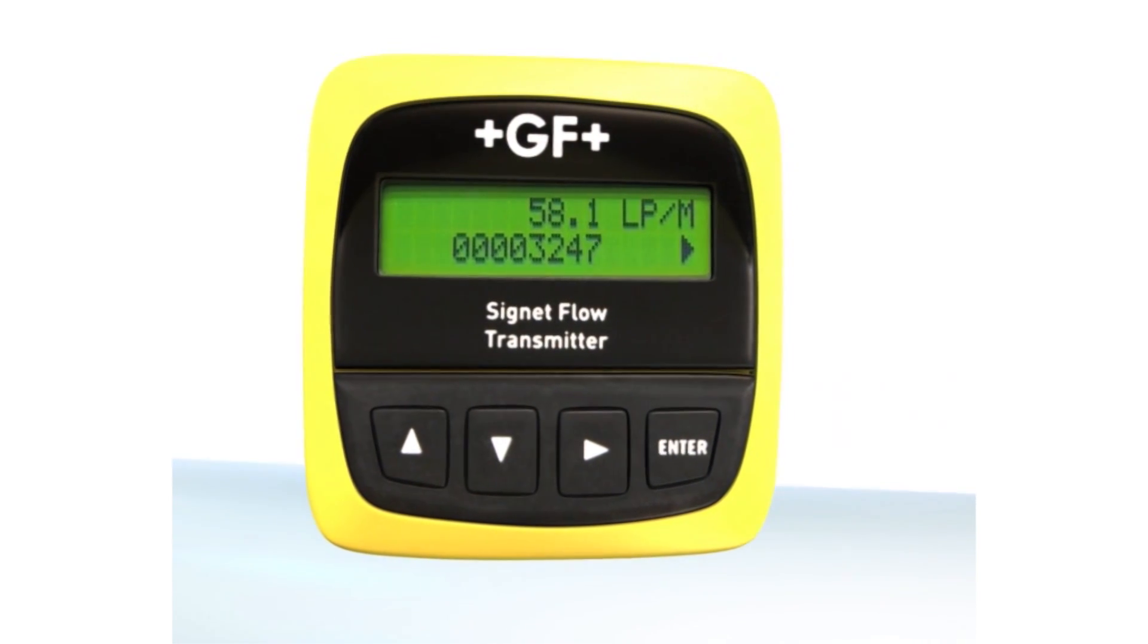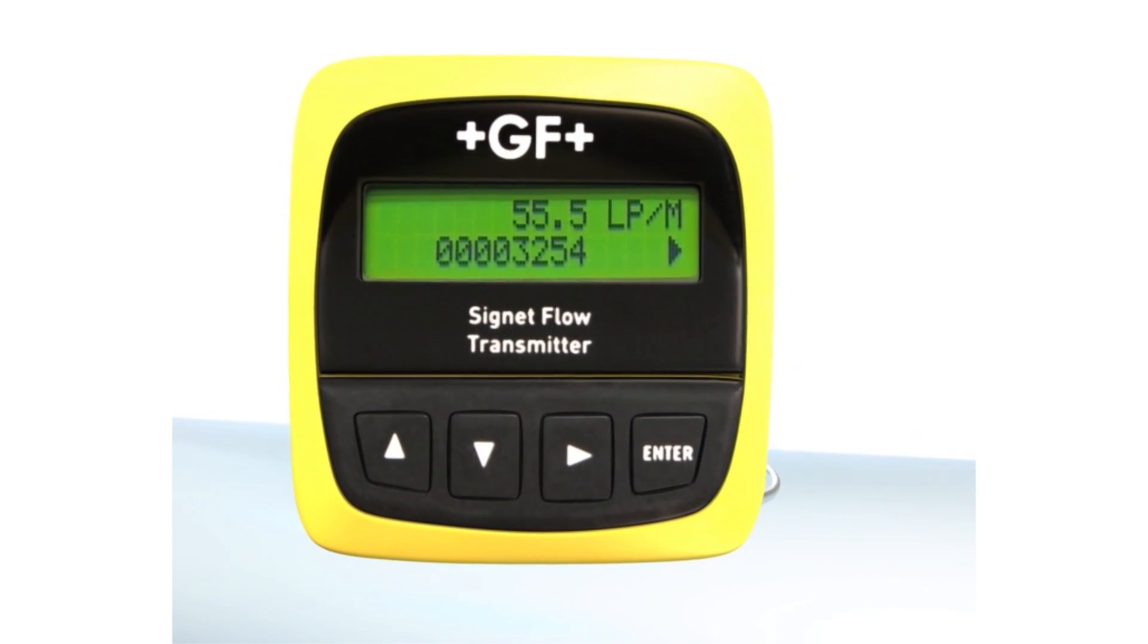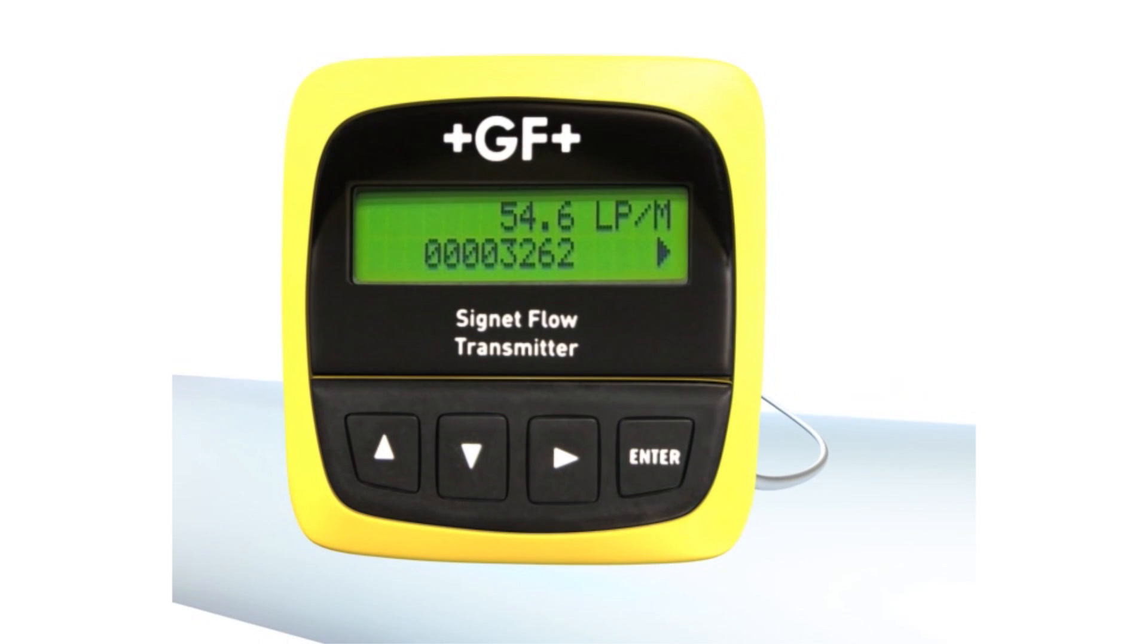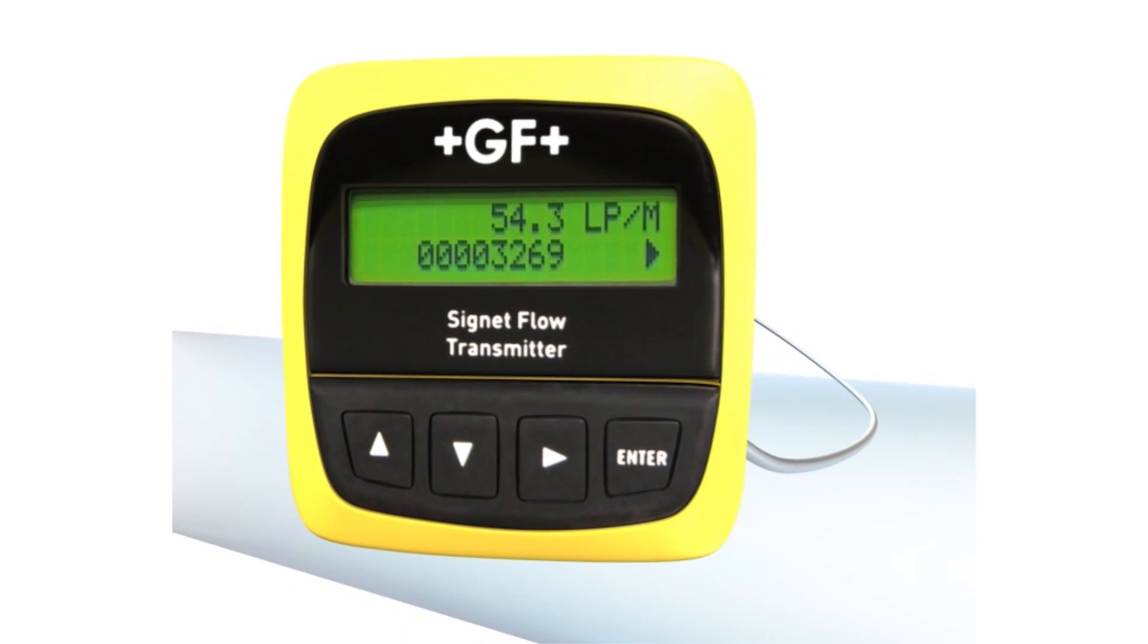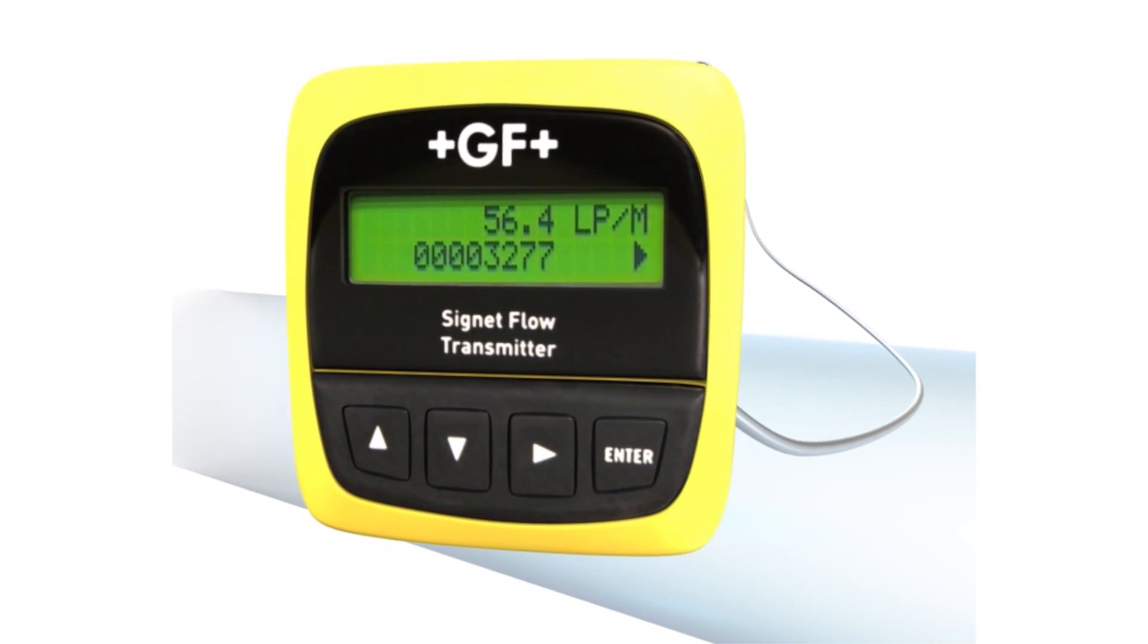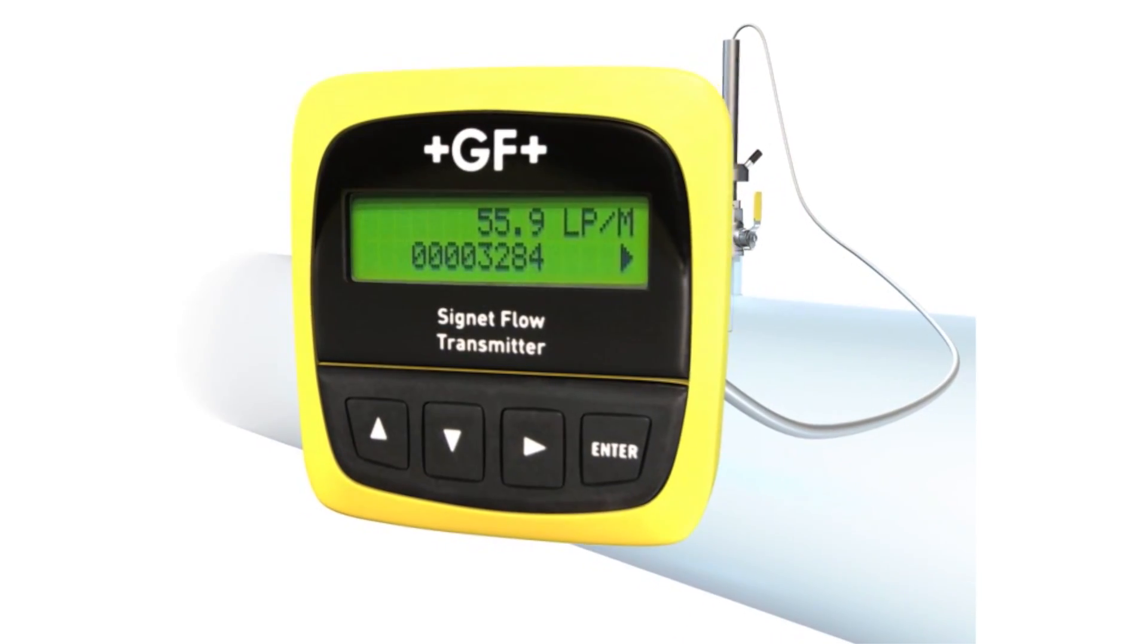The 8550 displays flow values, totalizes the volume of fluid running through the pipe, and is available with relays and 4 to 20 milliamp outputs for various control options.